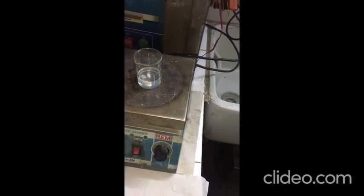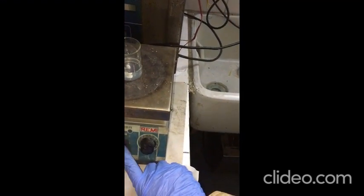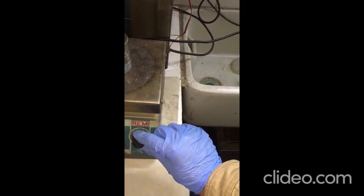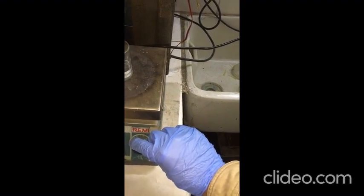I will show how the solution will be made. This is the switch on button. Switch it on. This is the rotation control. By this knob, we will change the rotation of the magnetic stir bar.